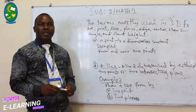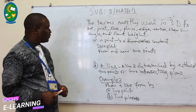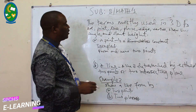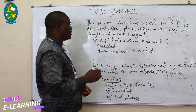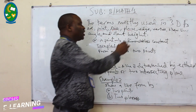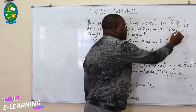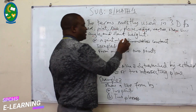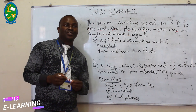The most commonly used terms in three-dimensional figures are: a point, a line, a plane, edge, vertex, skew lines, angles, and slant height. These are the most used terms in three-dimensional figures.